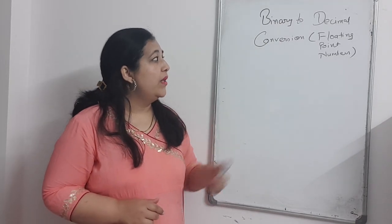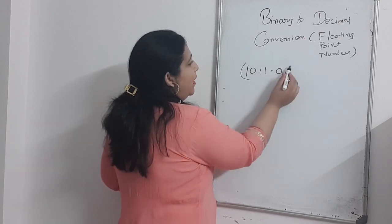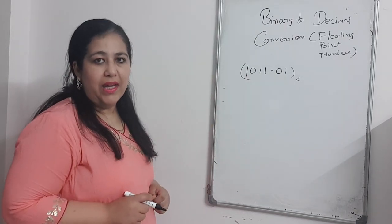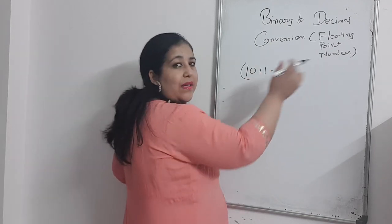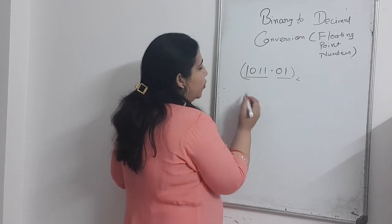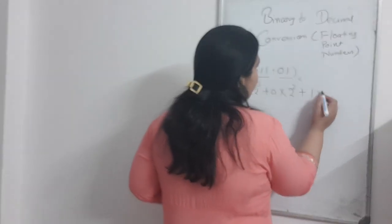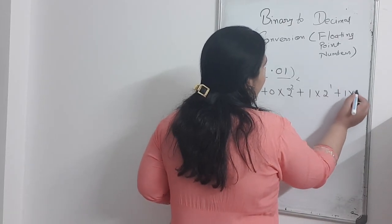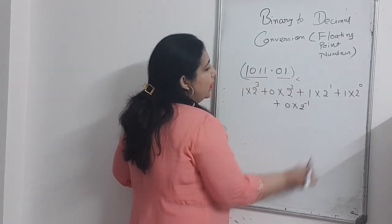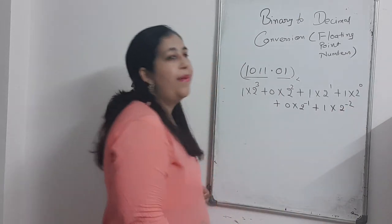Coming back to the topic, we have to convert binary to decimal where the number is given with a point. My number is 1011.01. We have already done how to convert 1011. For the integer part: 1 multiplied by 2 raised to the power 3, plus 0 multiplied by 2 raised to the power 2, plus 1 multiplied by 2 raised to the power 1, plus 1 multiplied by 2 raised to the power 0. Now for the fractional part: 0 into 2 raised to the power minus 1, and 1 into 2 raised to the power minus 2.